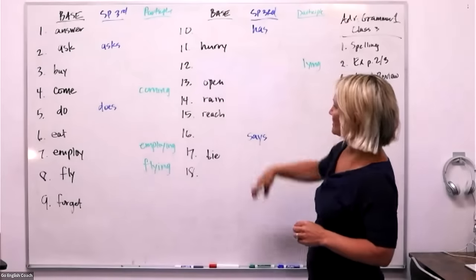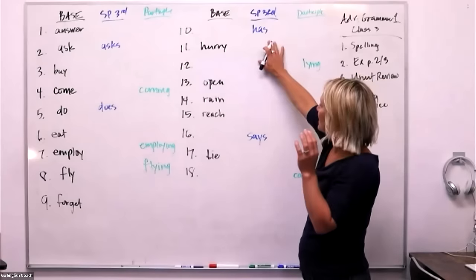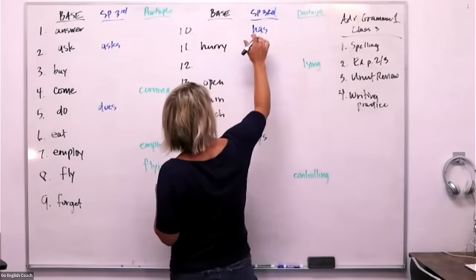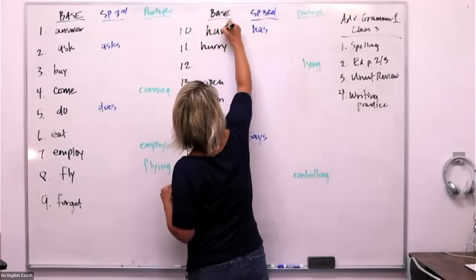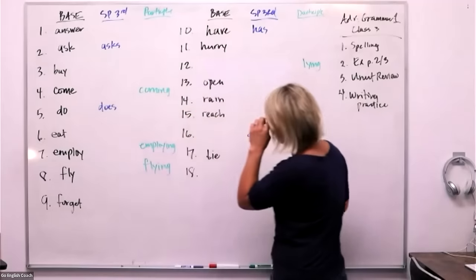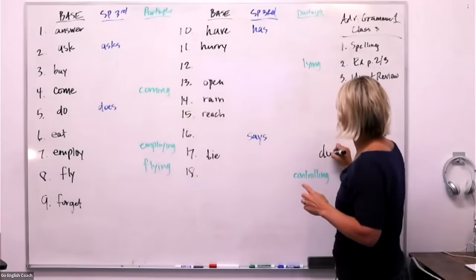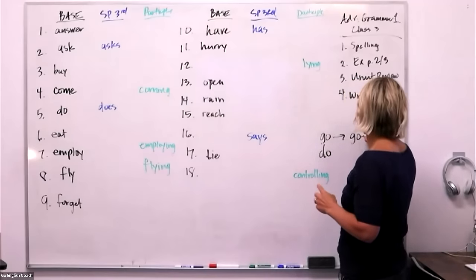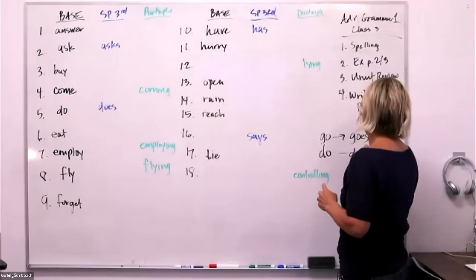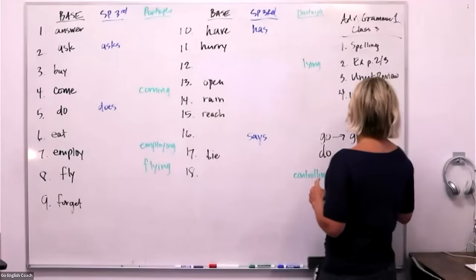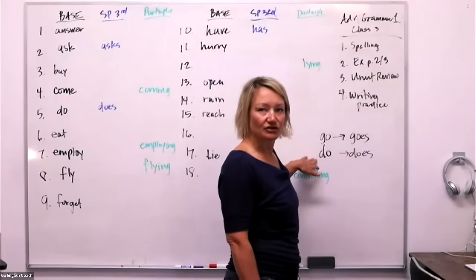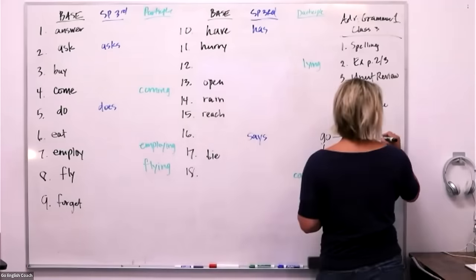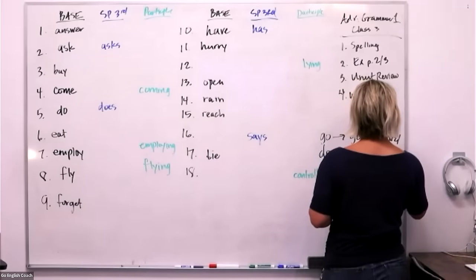We've got 'has' in the third person simple present — the verb is 'have.' This is one of those irregular ones, like 'do' and 'go.' For 'go' we say 'goes,' and for 'do' we say 'does.' Remember the pronunciation of those: 'goes' and 'does.'